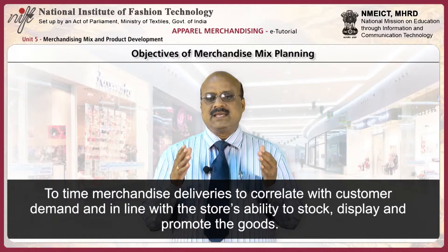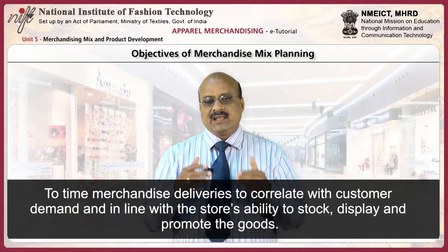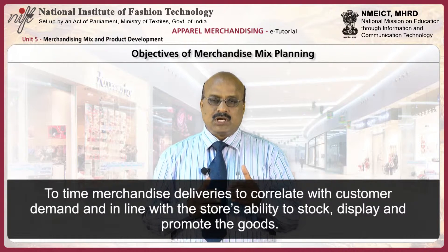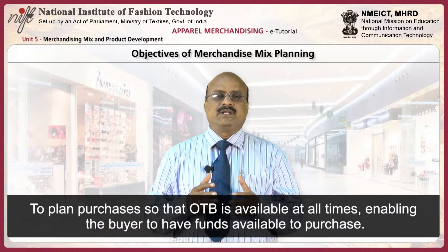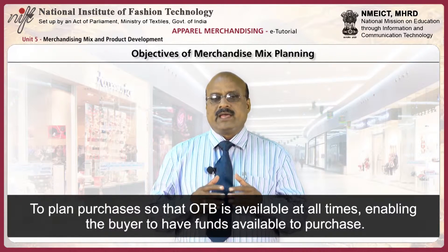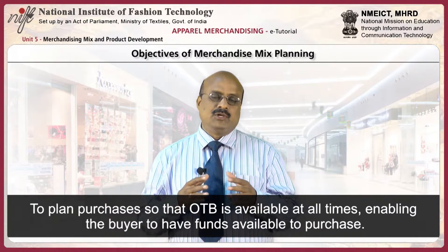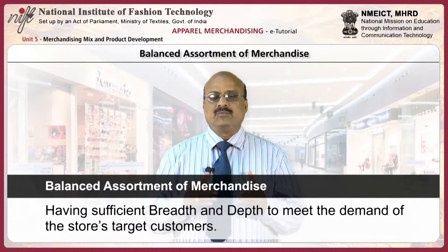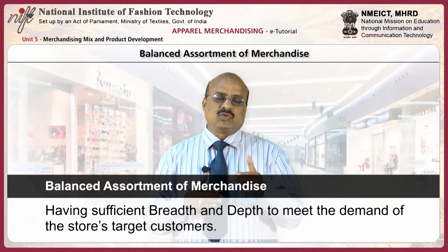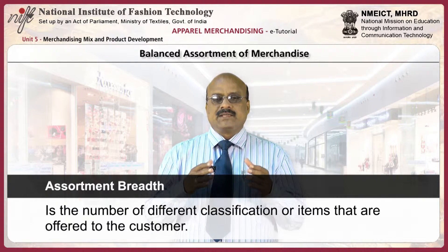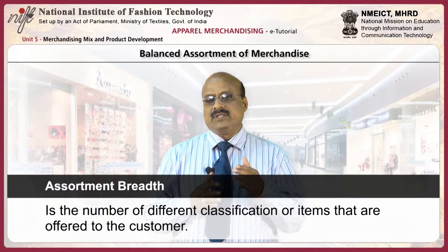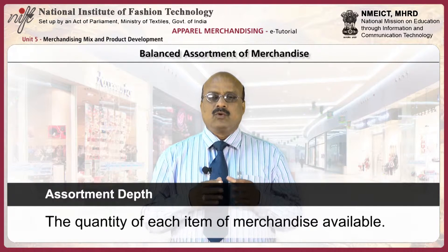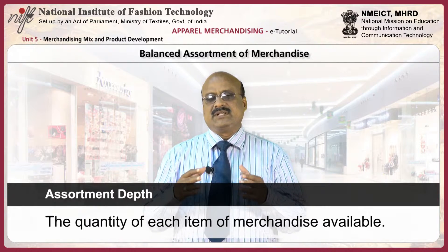To time merchandise deliveries to correlate with customer demand and in line with the store's ability to stock, display and promote the goods. To plan purchases so that OTB is available at all times, enabling the buyer to have funds available to purchase. Balanced assortment of merchandise is having sufficient breadth and depth to meet the demand of the store's target customers. Assortment breadth is the number of different classifications or items offered to the customer, and assortment depth is the quantity of each item of merchandise available.